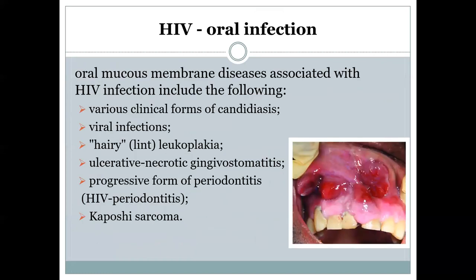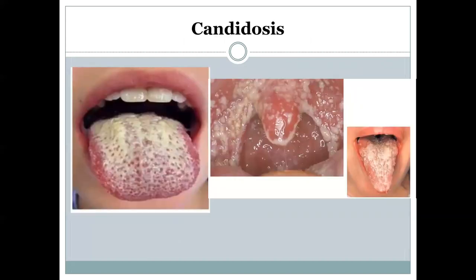HIV infection can also manifest in the oral cavity. Oral mucous membrane disorders associated with HIV include the following markers: various clinical forms of candidiasis, viral infections, so-called hairy or linked leukoplakia, ulcerative necrotizing gingivostomatitis, progressive form of periodontitis, and Kaposi's sarcoma. The picture shown is an example of Kaposi's sarcoma. The other images show different types and levels of candidiasis as a result of HIV infection.